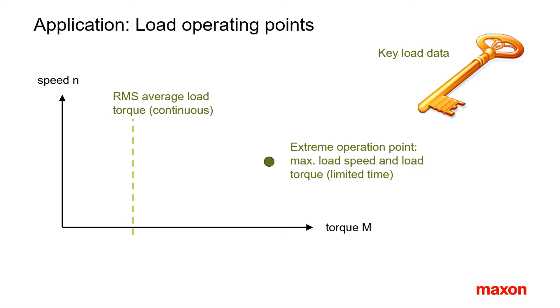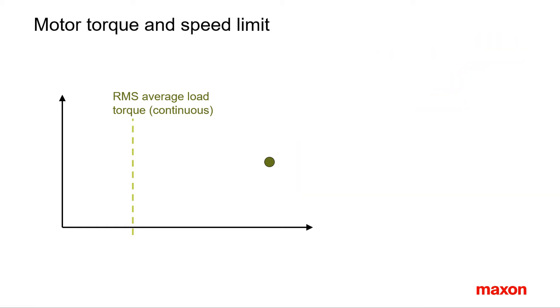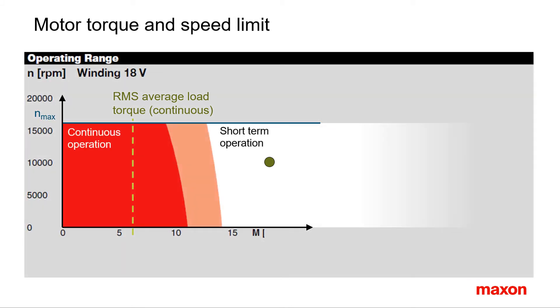Let's first look at speed. We need a motor with a speed limit that is high enough to cover all operating points. The speed limit of Maxon motors corresponds to the upper limit of the operating range diagram.